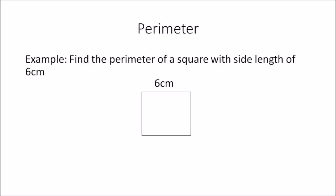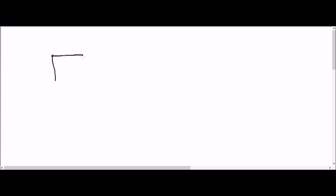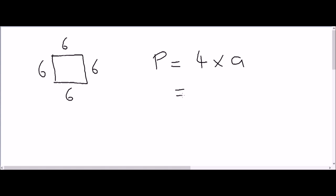In this example: find the perimeter of a square with a side length of 6 centimeters. It's very similar to the previous example, but one of the side lengths this time is 6 centimeters. We'll draw the square and label the sides as 6 centimeters each, then write down the formula: P is equal to 4 multiplied by a, which equates to 4 multiplied by 6, giving 24 centimeters. That's the perimeter of this particular square.